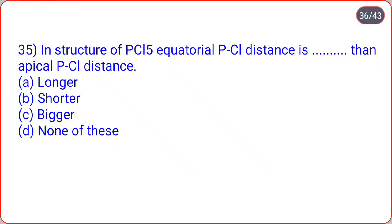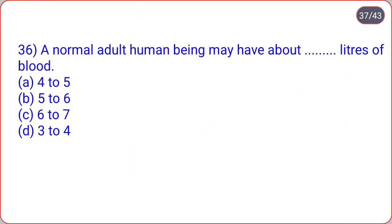In the structure of PCl5, equatorial P-Cl distance is dot-dot than apical P-Cl distance. Options are longer, shorter, bigger, none of these. Correct option is shorter. Equatorial P-Cl distance is shorter than apical P-Cl distance.